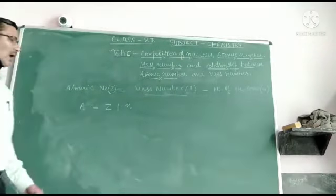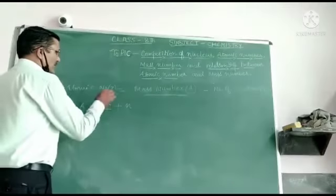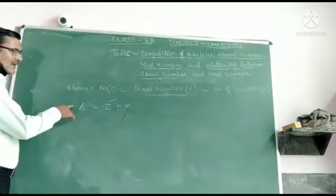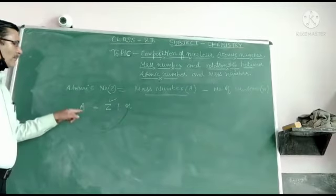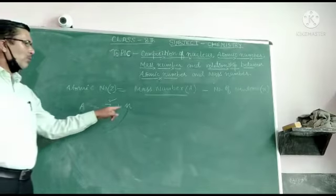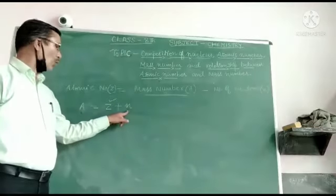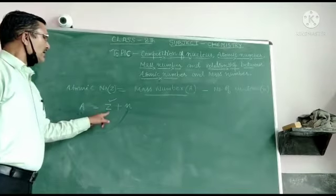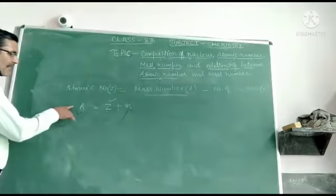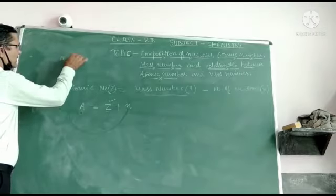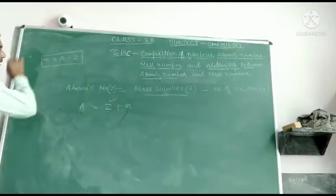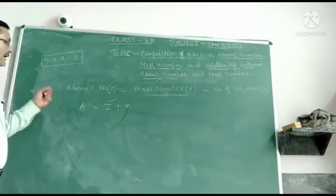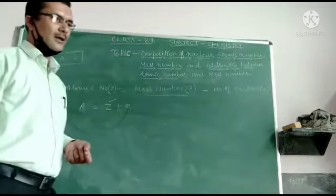Whenever you want to find out the number of neutrons and you have the mass number and atomic number, then Z will go to the other side and it will become A minus Z. In this way you can find the number of neutrons. This is the relationship between atomic number and mass number.